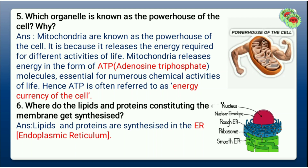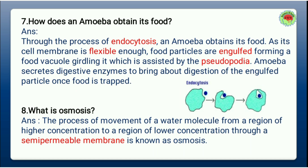Exercise Question 6: Where do the lipids and proteins constituting the cell membrane get synthesized? In this picture, the pink structure is the nucleus, the blue is the rough endoplasmic reticulum, and the green is the smooth endoplasmic reticulum. Lipids and proteins are synthesized in the endoplasmic reticulum.